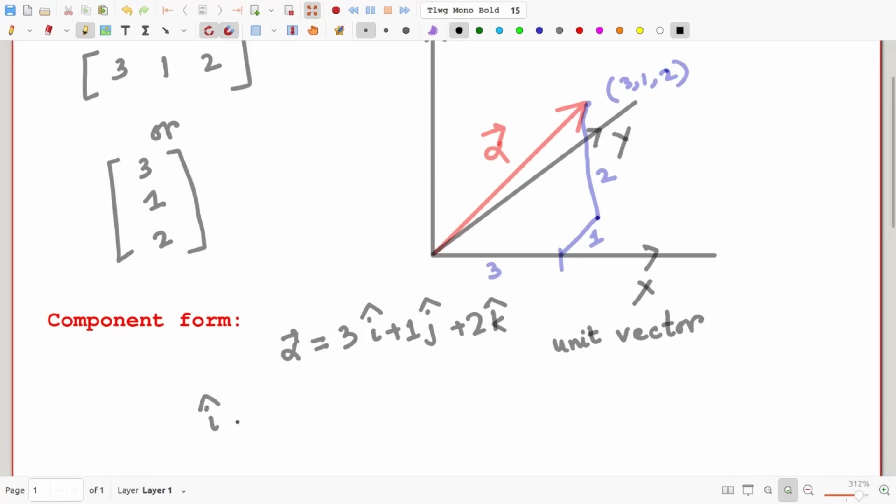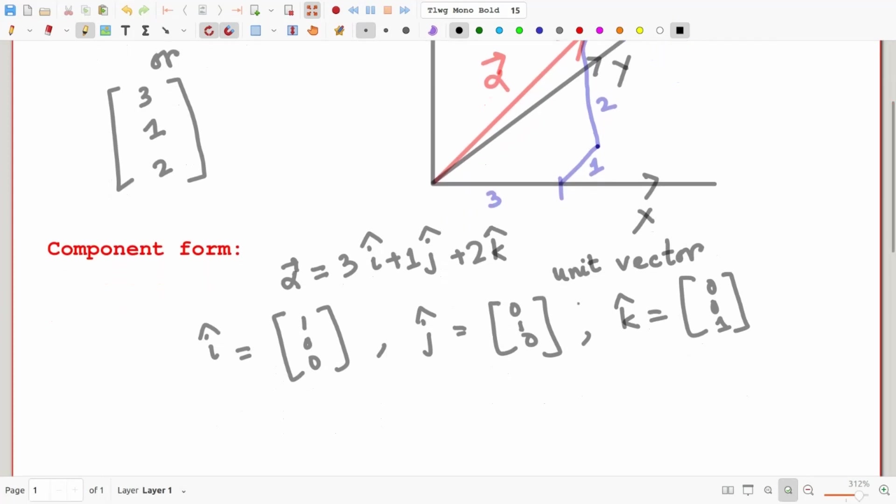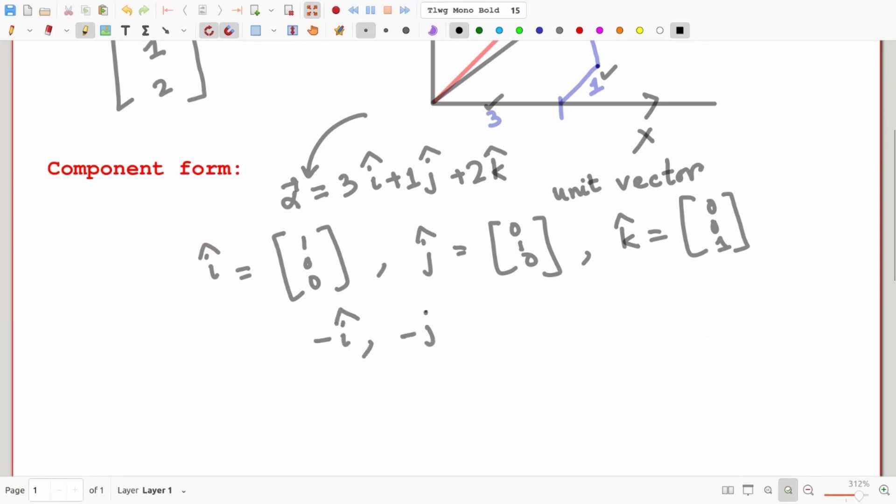We have i-cap equals [1, 0, 0], j-cap equals [0, 1, 0], and k-cap equals [0, 0, 1]. Therefore, the implication is we are moving 3 units along the positive x-direction, 1 unit along the positive y-direction, and 2 units along the positive z-direction, which will finally get you back to this alpha [3, 1, 2]. Similarly, we also have minus i-cap, minus j-cap, and minus k-cap, which respectively imply the negative x-direction, negative y-direction, and negative z-direction.